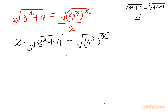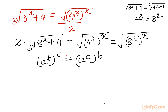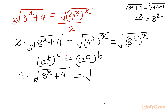Now we know that 4^3 is also 8^2. So I can write the RHS as (8^2)^x. Using the exponent law (a^b)^c = (a^c)^b, we can swap the powers, so this becomes (8^x)^2.